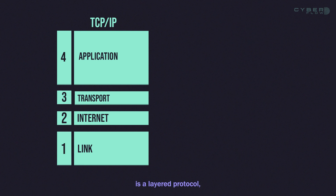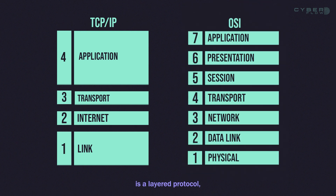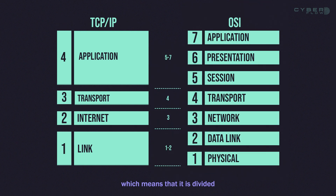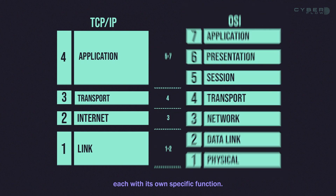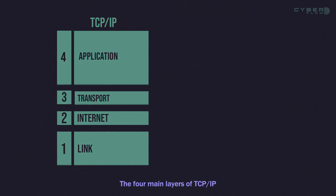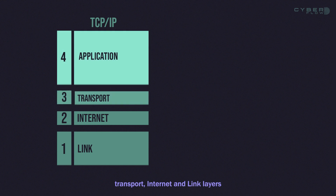TCP/IP is a layered protocol, which means that it is divided into different layers, each with its own specific function. The four main layers of TCP/IP are the application, transport, internet, and link layers.